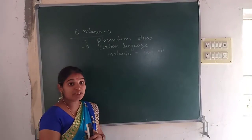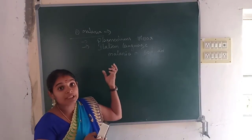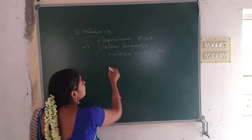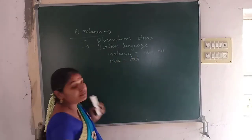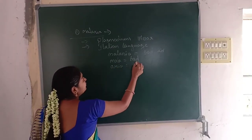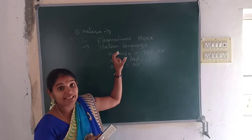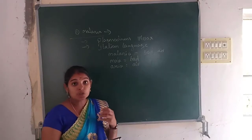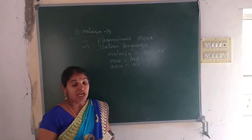In the earlier days, people thought that malaria was mainly caused by bad air. In Italian, 'mala' means bad and 'aria' means air. By combining these two words from the Italian language, the term malaria was derived, meaning bad air. Because in those days people thought malaria was mainly caused by bad air.